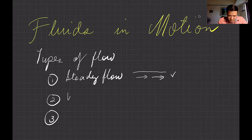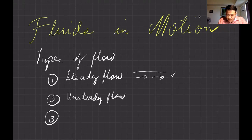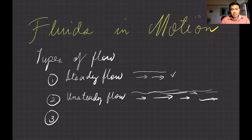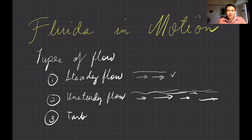Another type of flow is unsteady flow. In this case, the fluid is moving at different velocities — some particles faster, some slower. The velocity is not constant. There's also an extreme type of unsteady flow called turbulent flow.